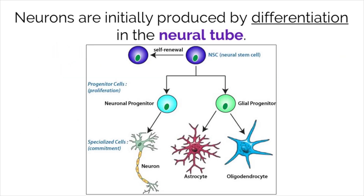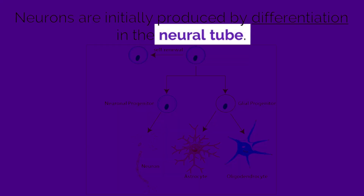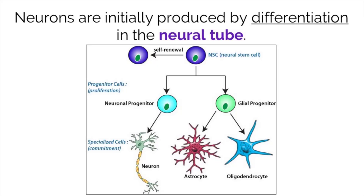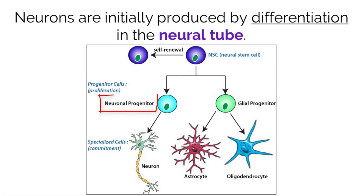Neurons are initially produced by cell differentiation in the neural tube. This occurs because the neural tube contains multipotent neural stem cells that can differentiate to form different types of cells that create and support the nervous system. If the cell is programmed to become a neural progenitor, it can then continue to develop into a common neuron.